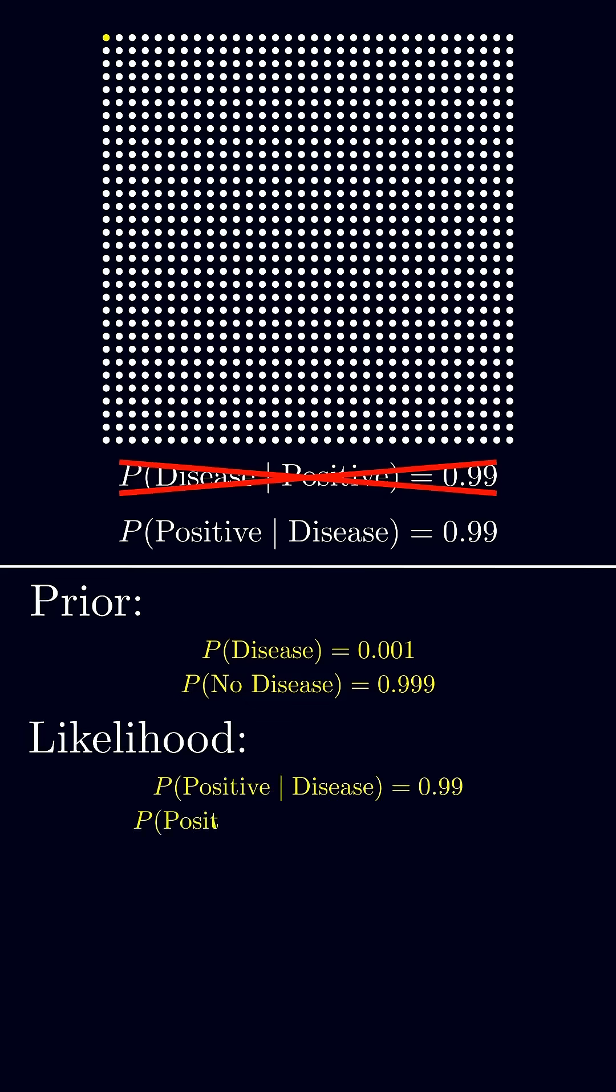And the probability of a positive test given the person has the disease is 0.99.